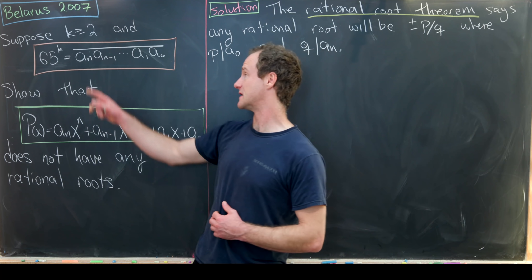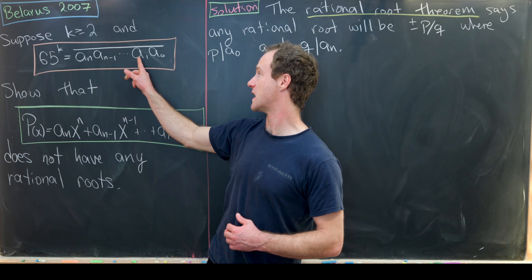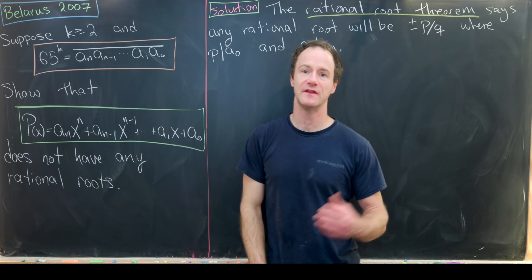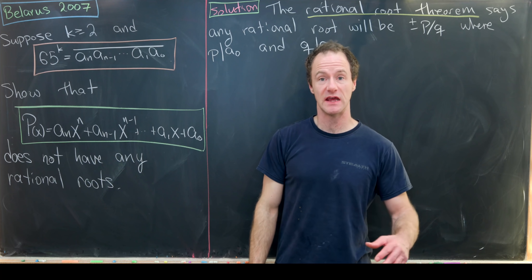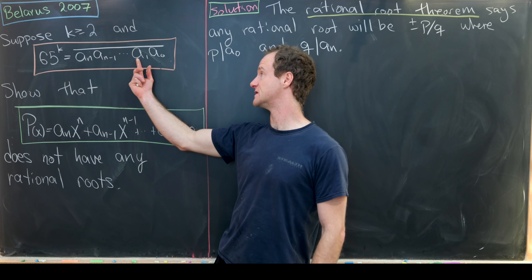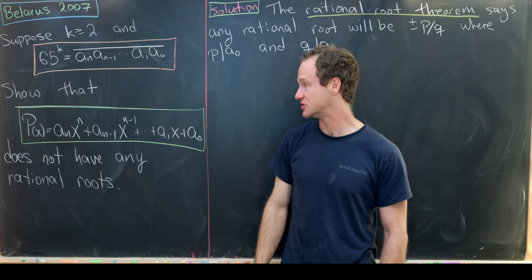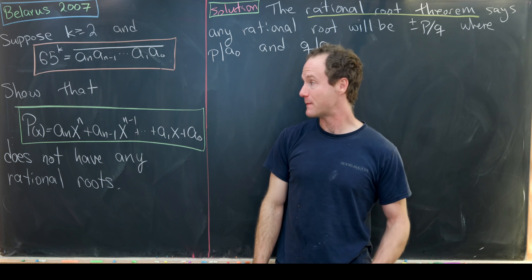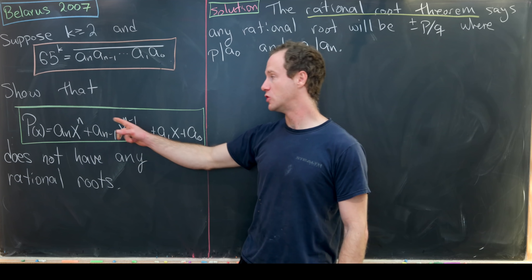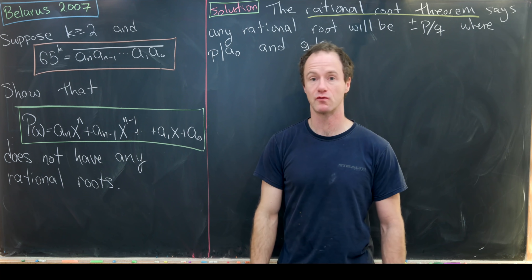The decimal expansion looks like a_n, a_{n-1}, a_{n-2}, all the way down to a_1, a_0, with a line over it meaning these are the digits in the expansion. So a_0 is the 1's digit, a_1 is the 10's digit, all the way up to a_n being the 10^n digit.